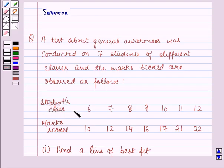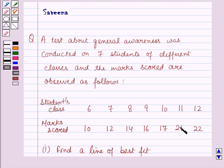The data given to us has the student's class as 6, 7, 8, 9, 10, 11, and 12, and the corresponding marks scored are 10, 12, 14, 16, 17, 21, and 22.